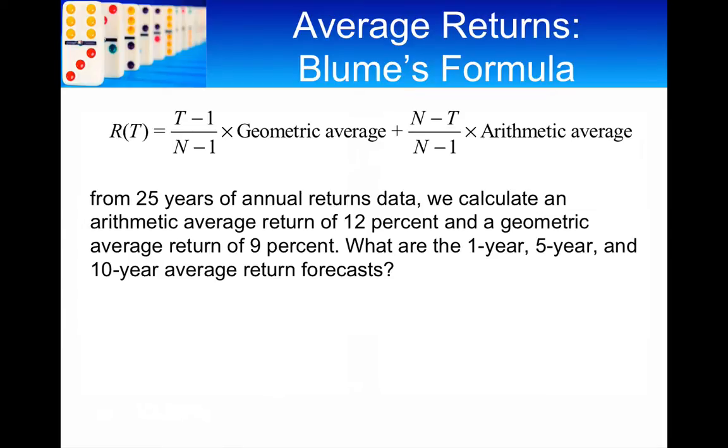And in the book, in page 252, I've got an example and we cover this here. So, let's just assume that 25 years of annual returns, you've got an arithmetic average return of 12% and a geometric average return of 9%. And then you're asked, what are the 1-year, 5-year, and 10-year forecasts?